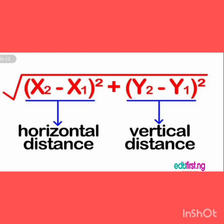So now let's look at this simple explanation of x2 and x1 and y2 and y1. The horizontal distance is standing for your x2 minus x1 squared, and the vertical distance is standing for y2 minus y1 squared, all in square root.